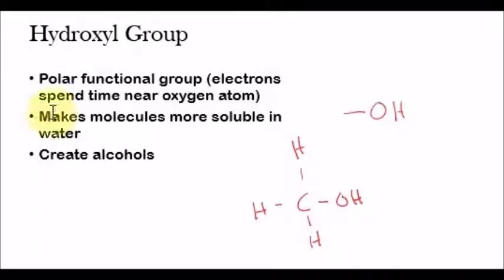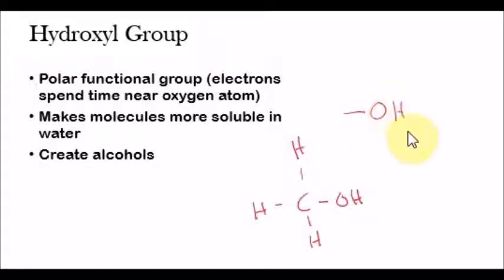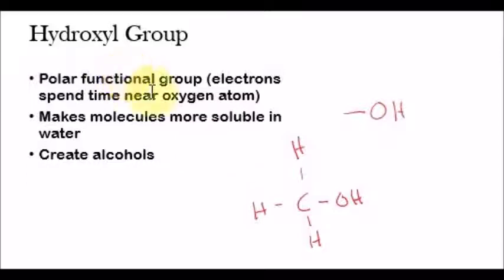The first functional group is the hydroxyl group, and that is an oxygen atom bonded to a hydrogen atom, with a single bond that can attach to anything else. It's a polar functional group because the electrons spend time near the oxygen atom — we saw this in water, how oxygen pulls on the electrons within the covalent bond. That oxygen atom is going to pull on the electrons within the single bond between the oxygen and the hydrogen, giving oxygen a partial negative charge and hydrogen a partial positive charge. Whenever a hydroxyl group is added to a molecule, it makes that molecule more soluble in water.